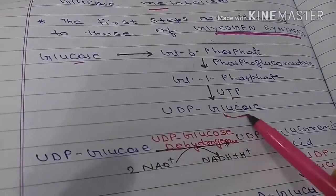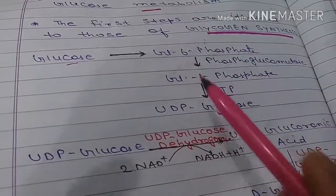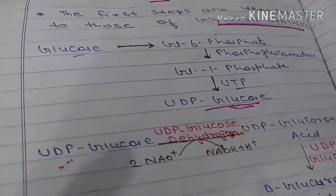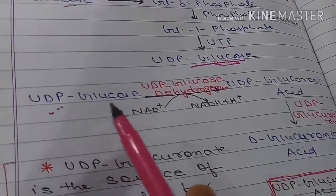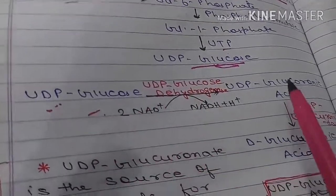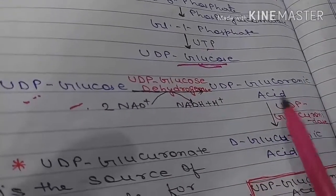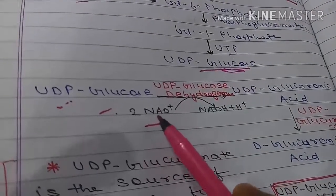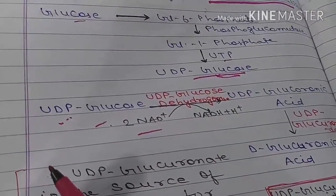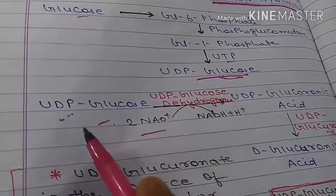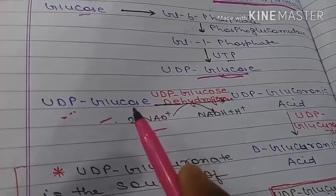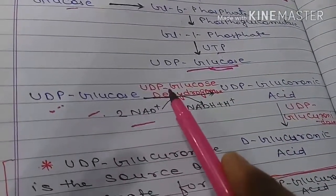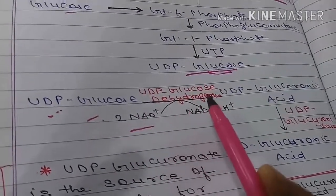For the glucuronic acid pathway, you need to know that UDP-glucose enters the pathway. The first step is that UDP-glucose is oxidized to UDP-glucuronic acid. Two NAD+ are consumed — the hydrogens from UDP-glucose are removed — and UDP-glucose is oxidized to UDP-glucuronic acid. The enzyme is UDP-glucose dehydrogenase.